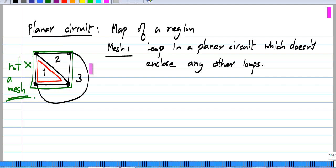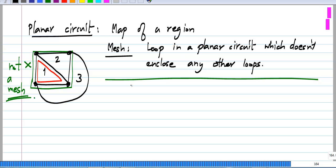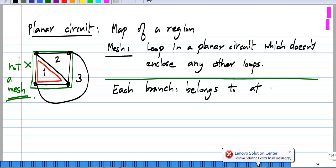You can think of the planar circuit as the map of a country, and each mesh as one of the states of a country. With these definitions, you see that each branch belongs to at most two meshes.